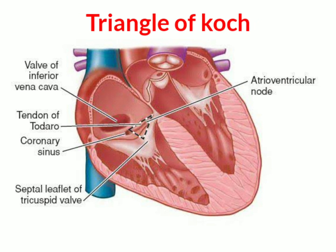Another important part of the right atrium is the triangle of Koch, a triangular area present between the coronary sinus and the tricuspid valve. It is bounded posteriorly by the tendon of Todaro, which is a fibrous extension of the Eustachian valve of the inferior vena cava, and anteriorly by the septal leaflet of the tricuspid valve — which has three leaflets: septal, anterior, and posterior. The inferior border is formed by the coronary sinus. The triangle of Koch is an important landmark for the atrioventricular node, or AV node.